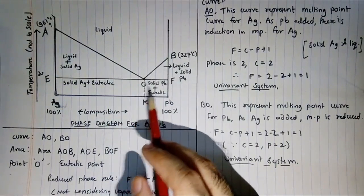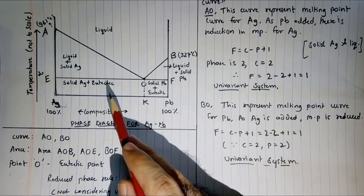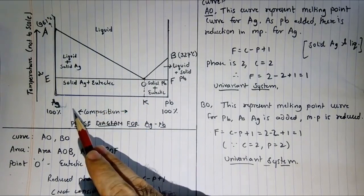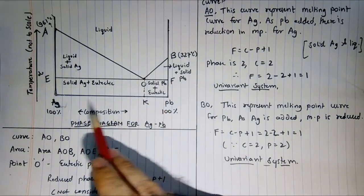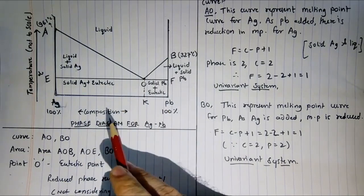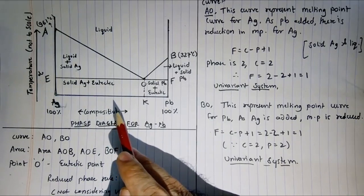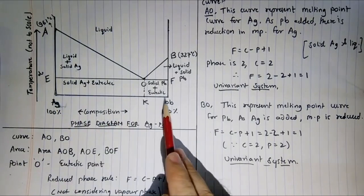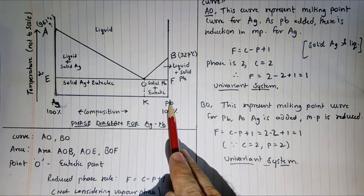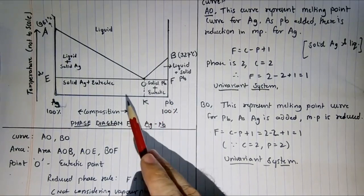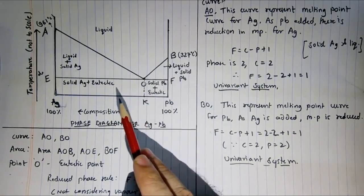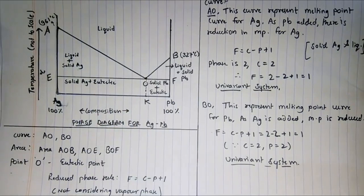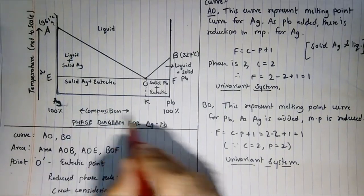The maximum number of phases for this system is 4: silver, lead, their mixture, and vapor. Now, I have already discussed the reduced phase rule. Since these are solids, they have very negligible vapor pressure, so we are neglecting it and taking it as constant. That is why we are taking temperature and composition as the two variables.